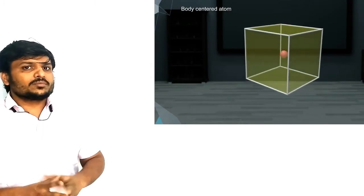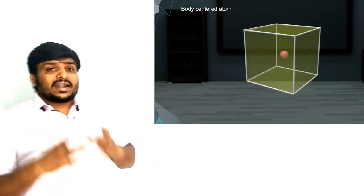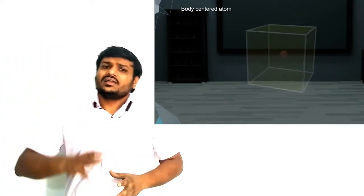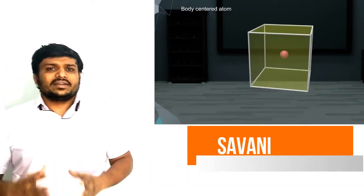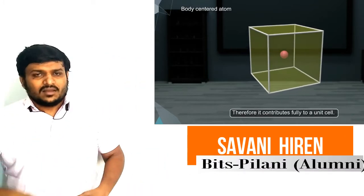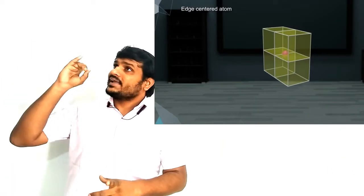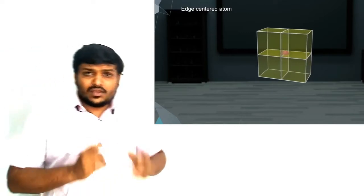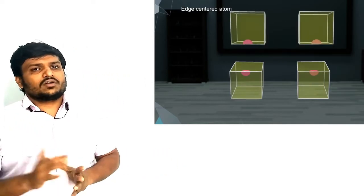If your atom is present in the center of the unit cell, it is not divided by any other unit cell, so the unit cell gets the entire atom — one full atom. Additionally, if your atom is on an edge, then your unit cell will get one-fourth portion of that atom.